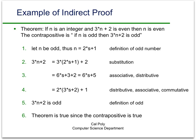One more example of an indirect proof. And this time our theorem is if n is an integer and 3 times n plus 2 is even, then n is even. So what's the contrapositive? The contrapositive is, take the negation of the conclusion of the original, if n is odd, then 3 times n plus 2 is odd. Okay, so now, again, we just do a direct proof on the contrapositive.